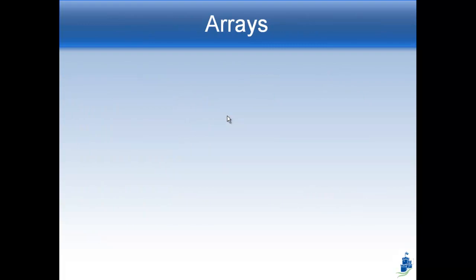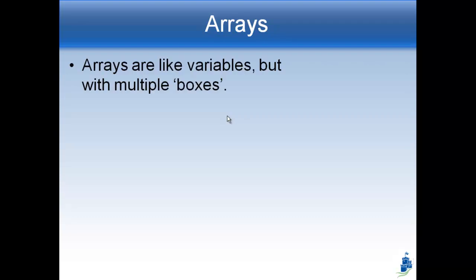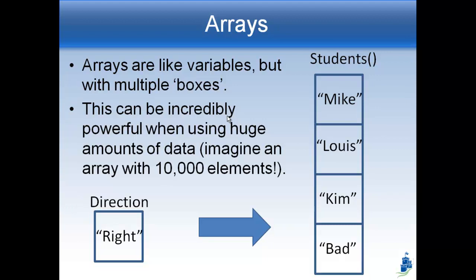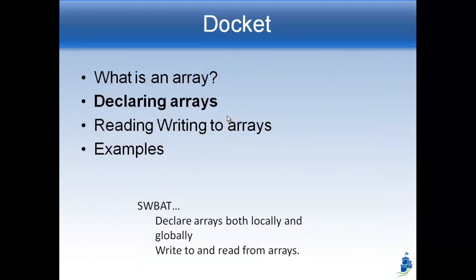All right, so arrays are these new things that we have that are going to help us to do this. They're kind of like variables, but instead of just having one box, they've got lots of boxes. So this is our original variable direction, which we can store right inside. But now we're going to learn about something called arrays, which is one thing. This array is called students, but it actually has multiple places that you can store stuff in. And so you can have all kinds of different people in there. Does that make sense? The idea is I'm not going to make students one, students two, students three. I have just students. But I can hold multiple pieces of information. It's like a multivariable.